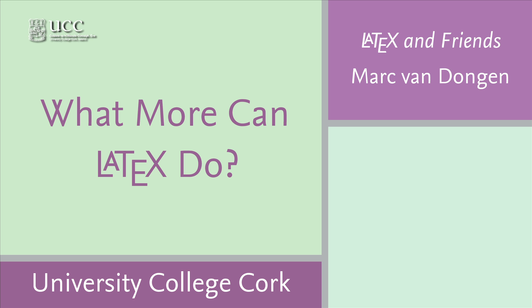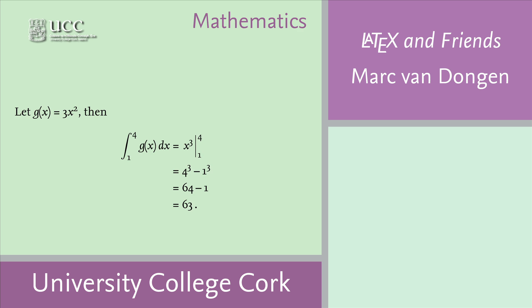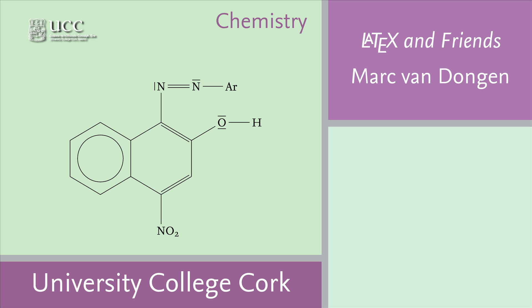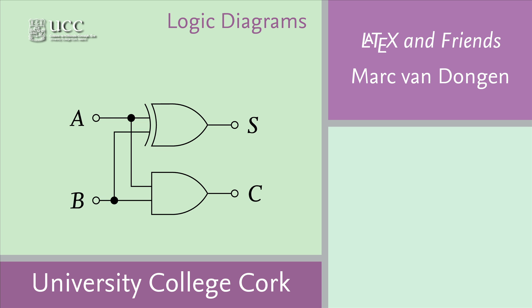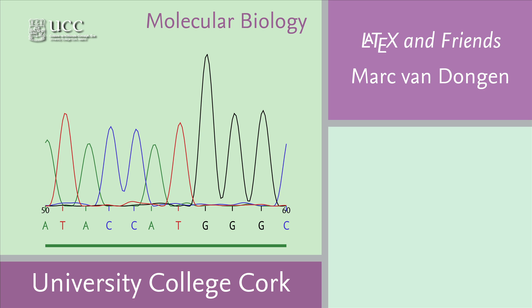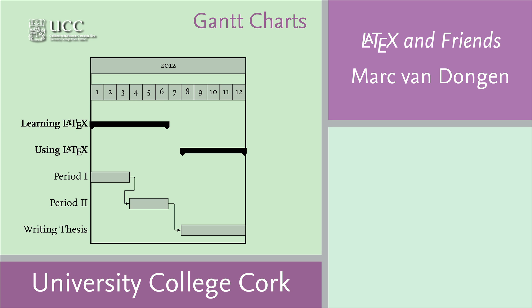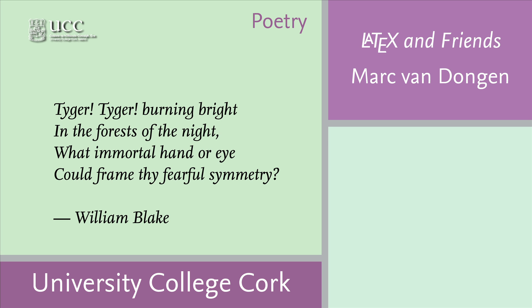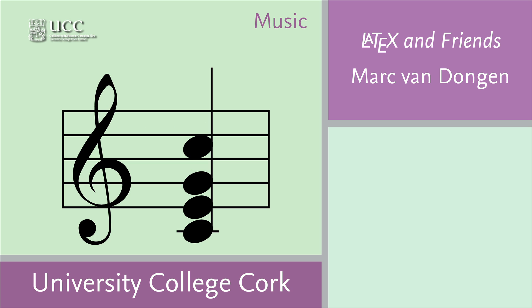There's a common misconception that LaTeX is used only by mathematicians, computer scientists, and physicists. To a degree that's true because LaTeX is used a lot by these communities. However, LaTeX is also used in the life sciences, humanities, and outside academia. For example, LaTeX is used in chemistry — you can typeset logic diagrams. LaTeX is used in molecular biology; you can typeset DNA sequencing chromatograms and nucleotide and peptide sequence alignments. You can also typeset Gantt charts, syntax trees, poetry, and music with LaTeX, and so on.